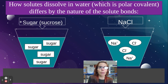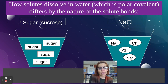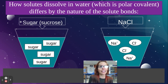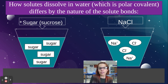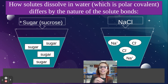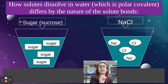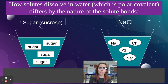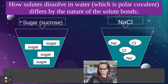Last section: how solutes dissolve in water. A solute is what you're dissolving — if you're making lemonade, the solute is the sugar; in salt water, the salt is the solute. How solutes dissolve in water — which is polar covalent — differs by the nature of the solute bonds. The way sugar dissolves in water is very different than the way salt dissolves. Sugar is a covalent molecule; salt is an ionic compound.